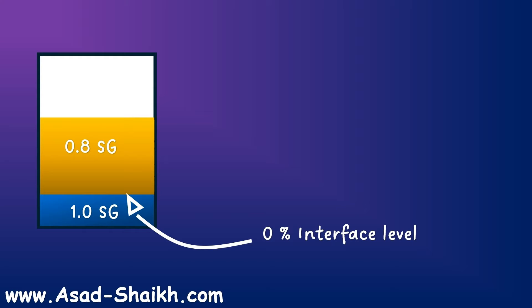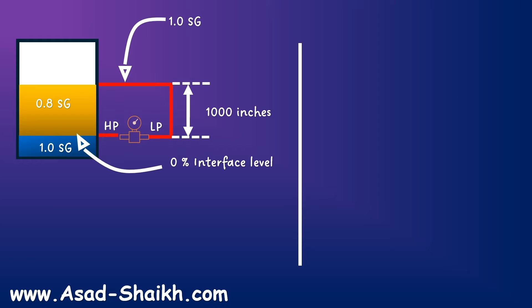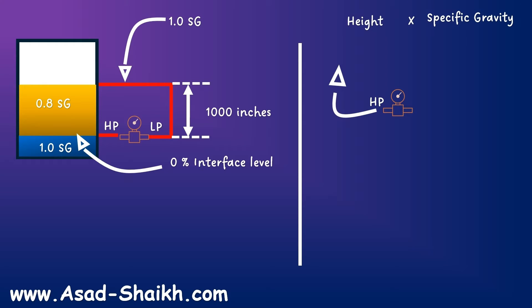Now we are interested to measure the zero interface level. So let us put our DP meter here. Once we put it, we should know the center-to-center distance, which is going to be 1000 inches. The heavier line is going to be filled with the heavier fill fluid, which is water here with a specific gravity of 1. Now let's do the actual calculation. The HP side formula is height into specific gravity: 1000 inches multiplied by the specific gravity of the lighter fill fluid, which is 0.8, giving us 800 inches of water column.